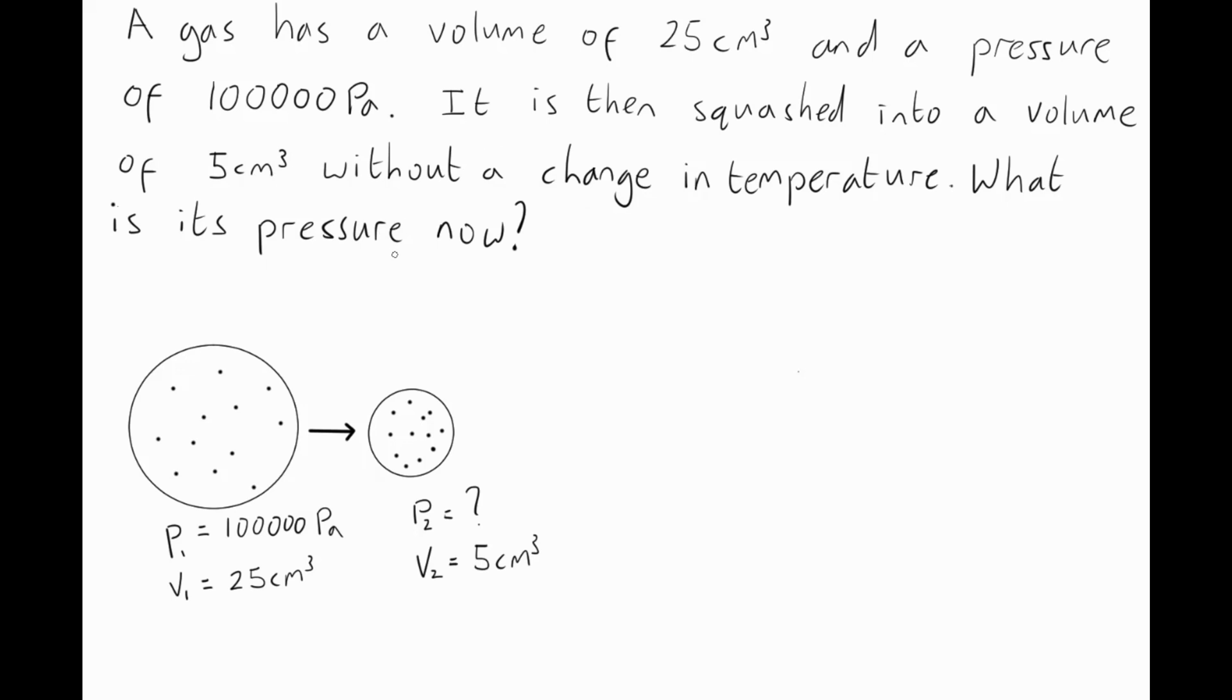I find it helps in questions like this to draw a quick diagram so that you know what we're dealing with and can visualize the problem. So, here's the gas at first. Pressure 1 is 100,000 pascals. Volume 1 is 25 centimeters cubed. In situation 2, after it's been squashed, the pressure we do not know. The volume we do know is 5 cm cubed.